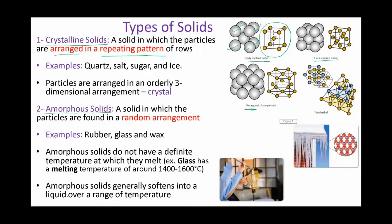It might be hexagonal or tetrahedral — so there are different geometrical shapes for the crystalline solids. Metals are usually crystalline solids. Other examples include ice, sugar, salts of different types, quartz, and diamond. All of these are examples of crystalline solids where the particles are arranged in a geometrical shape.